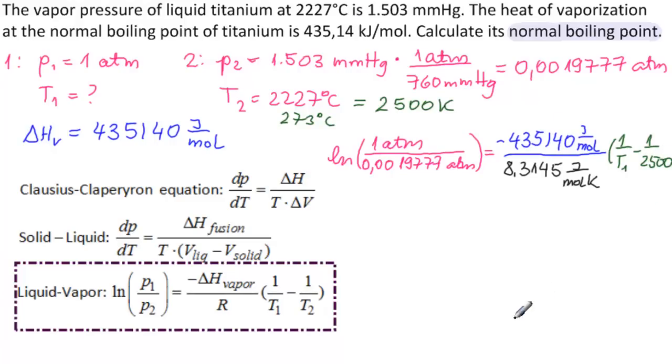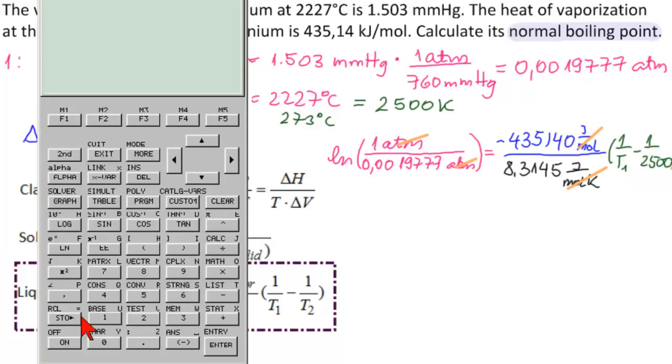So everything cancels as we need it to cancel. So all the units cancel. And T1 will be in Kelvin as we need it to be. So let's start to calculate. We have 1 divided by this. So 1 divided by second answer. So we have 1 over the answer. And that's 505. And we need Ln of that. So Ln of the answer.